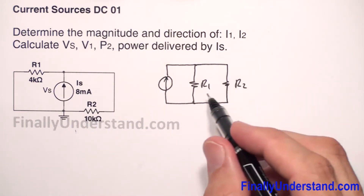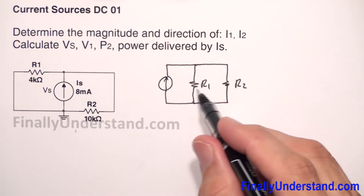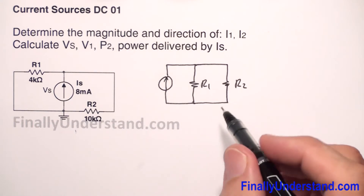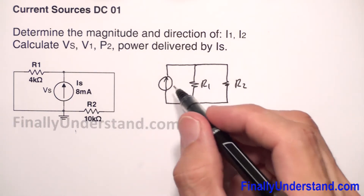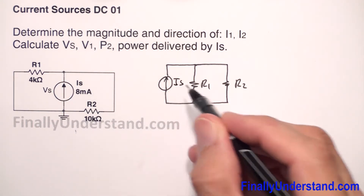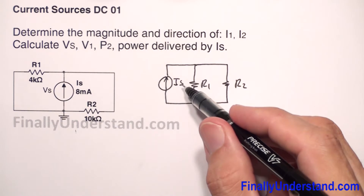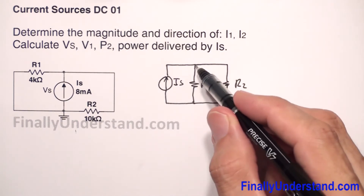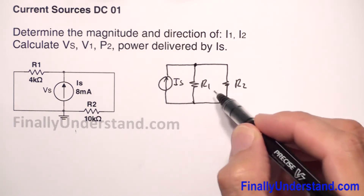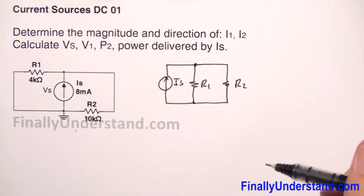So now you can see that resistor R1 and R2 are in parallel, and I have my current source — this is my IS.